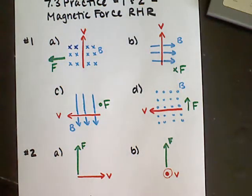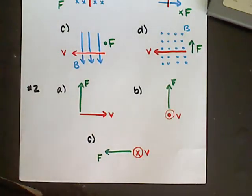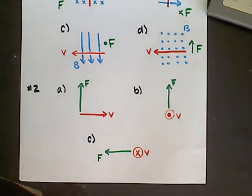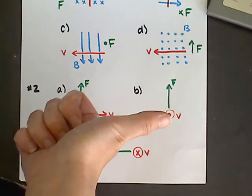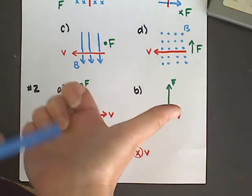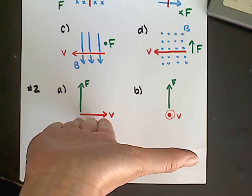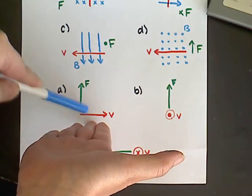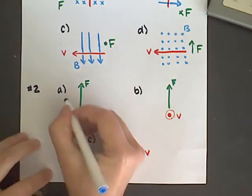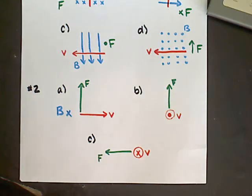That's how we use the right-hand rule to find the direction of force given velocity and field. For number two, we change things up: you're given the direction of the velocity of the charged particle and the force acting on it, and you need to figure out the direction of the magnetic field. Starting with velocity — my thumb — the velocity is directed to the right, so my thumb goes right. The force is directed upward, so my palm must face up. With thumb right and palm up, my fingers point down into the page — that's the direction of the field.